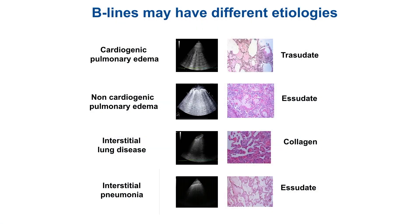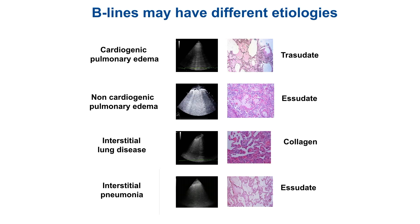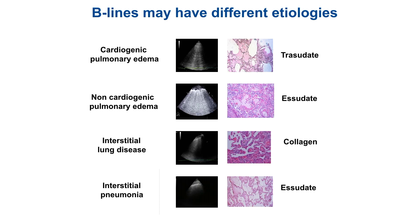B-Lines are a non-specific sign of partial deaeration of the lung and can be present in many different conditions, such as pulmonary edema of any etiology — cardiogenic, ARDS, volume overload, for instance — interstitial lung disease, and interstitial pneumonia.